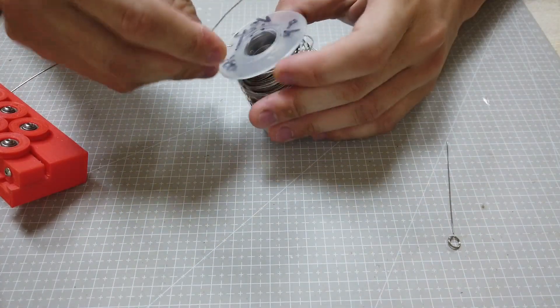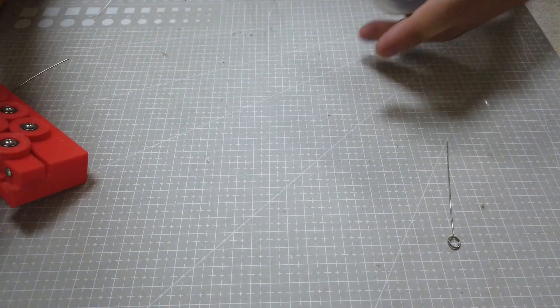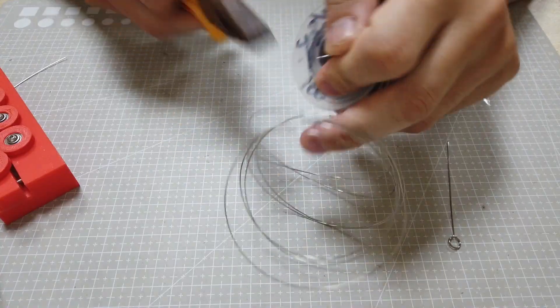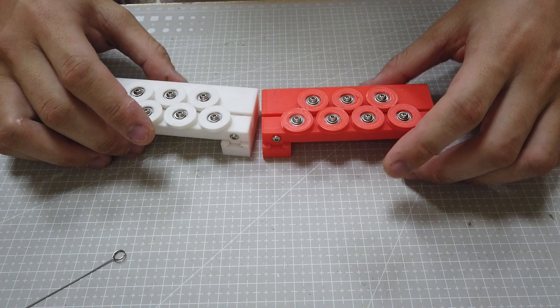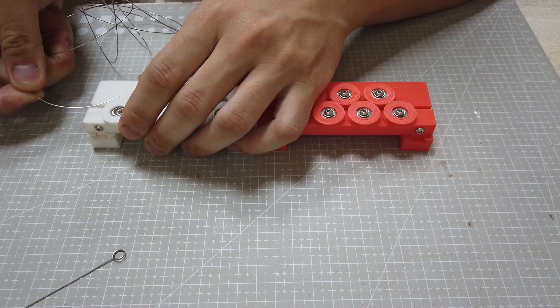And because it comes in a roll, it's very curvy. I'm going to cut the portion out first. And then using this straightener, I downloaded it from Github. I'll share the link to it as well. Using it, I'm going to straighten the wire first.